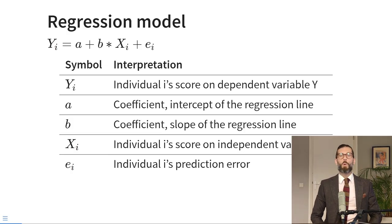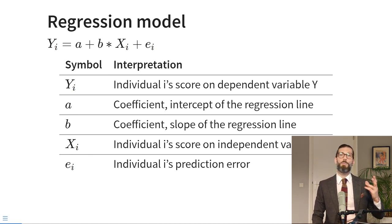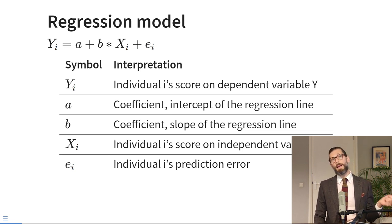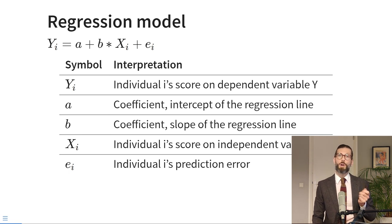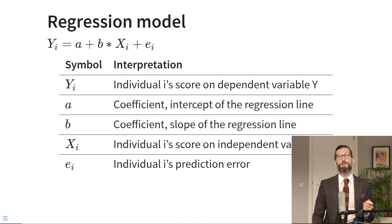Let's have a closer look. First, we will recap what we've learned about the regression model. We can represent it as a formula where we can say that the dependent variable y for every individual i is a linear function of an intercept a plus a slope b times the individual values on the predictor variable x, plus individual error terms epsilon sub i.